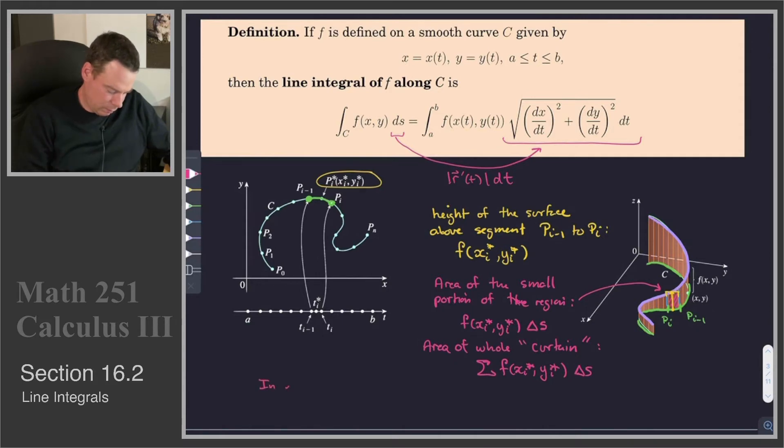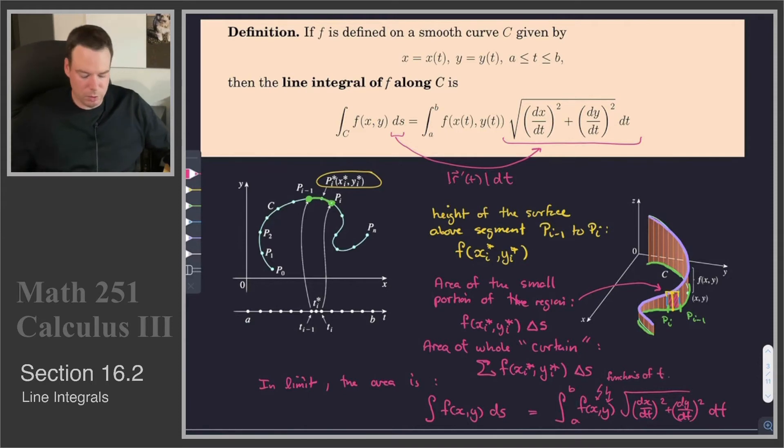So in the limit the area is given by an integral. It's the integral of f(x,y) ds. And ds is given by—so that's f(x,y) times the square root of (dx/dt)² plus (dy/dt)² dt, and our limits of integration on t are going to go from a to b. And here this f(x,y), the x and y we would write as functions of t, whatever they are in terms of t. So that's where this integral is coming from. It's like trying to find the area of the region under the surface above the curve.